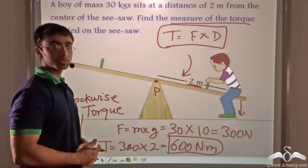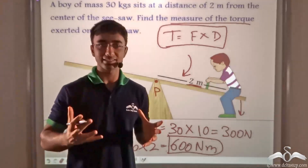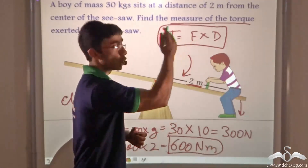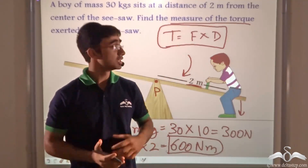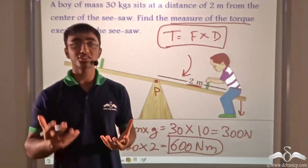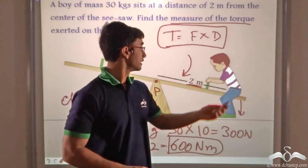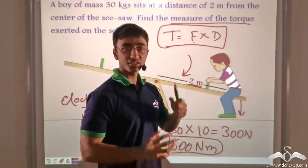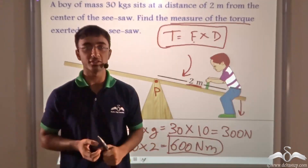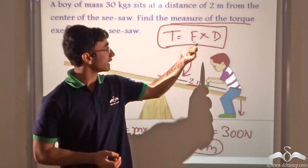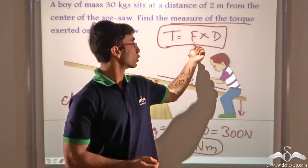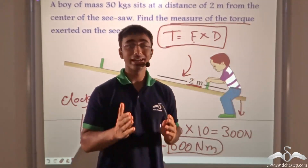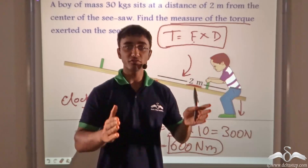We learnt about the capability of rotation of a body about a fixed axis — this capability is known as torque. Torque, also known as moment of force, depends on two things: the force acting on the body and the perpendicular distance from the point of application of force to the fixed axis of rotation. Torque is given by the product of force and the perpendicular distance between the point of application of force and the fixed axis of rotation.